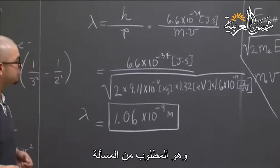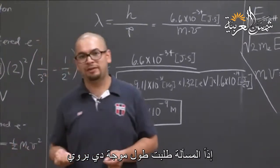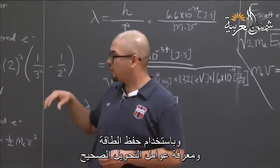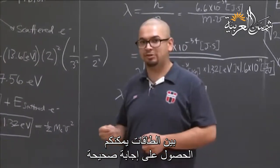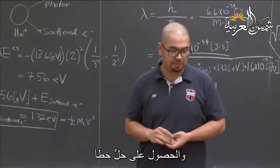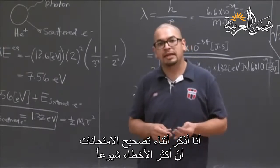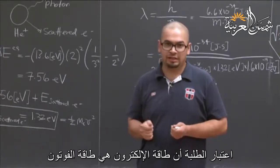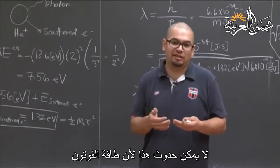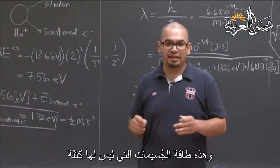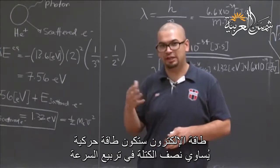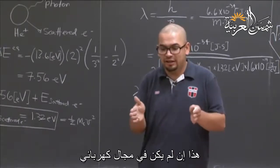By conserving energy and knowing the right conversion factors between energies, you're able to get an answer. It's really easy to complicate things and get a wrong answer. From grading the exams, the most common error people made was letting the energy of the electron be the energy of a photon. That can't be, because the energy of a photon is just Planck's constant times the frequency — that's the energy for massless particles. Your electron has mass, so if it's moving it's not h-nu, it's kinetic energy: one half mv squared.